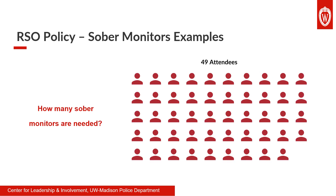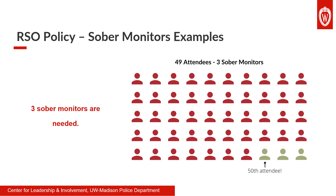This one's tricky. At this event hosted by a single organization, we have 49 attendees. How many sober monitors do we need? Here's a hint: when figuring out how many sober monitors you need, sober monitors should be considered attendees as well. Go ahead and pause the video to jot down your answer. The correct answer is actually three. Since sober monitors are considered attendees, there are technically 52 attendees at this event. You would need two sober monitors for the first 50 and a third for attendance up to 74. To meet the requirement that at least half of the sober monitors are executive members, at least two of them must be an exec member or a member of the group for at least one year.